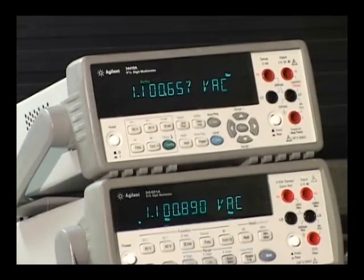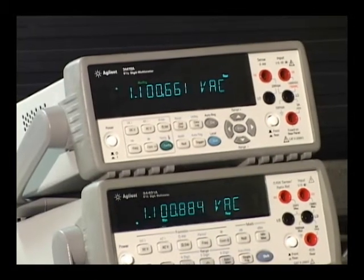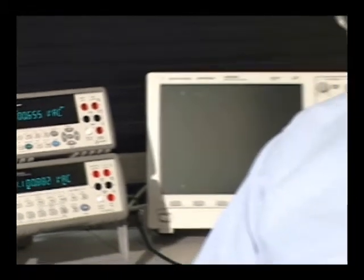The 34401A uses a digital sampling technique to give incredibly fast AC measurements, peak-to-peak measurements at 50,000 readings per second. And in DC volts, you can take 10,000 readings a second at five and a half digits. This is almost a 300X improvement over the 34401A.